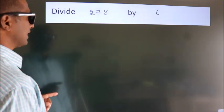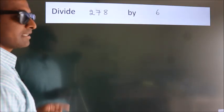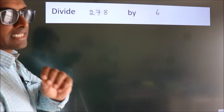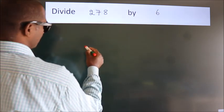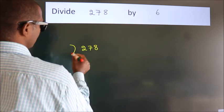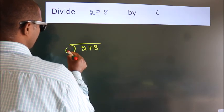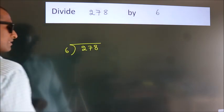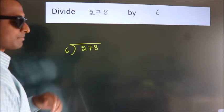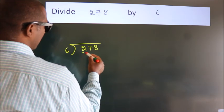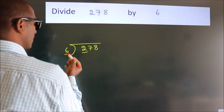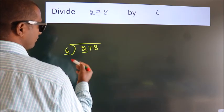Divide 278 by 6. To do this division, we should frame it in this way: 278 here, 6 here. This is step 1. Next, here we have 2. 2 is smaller than 6, so we